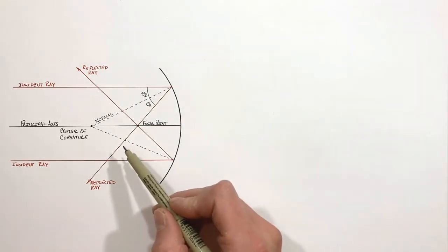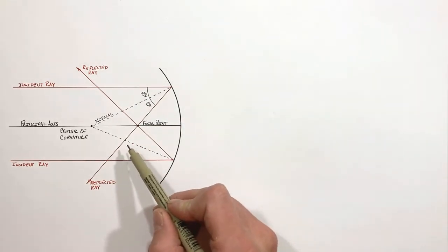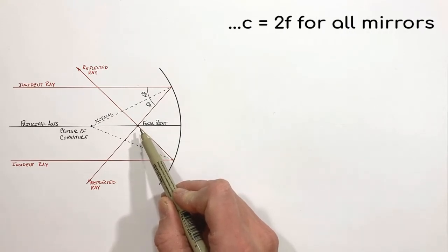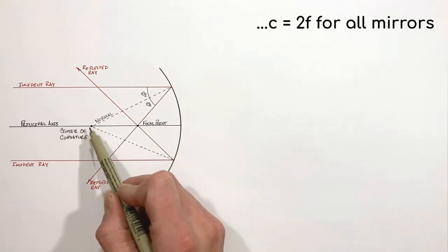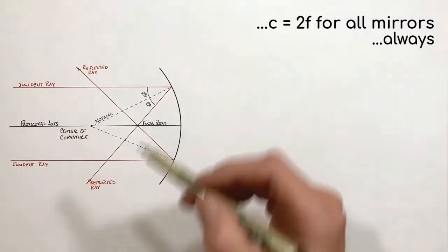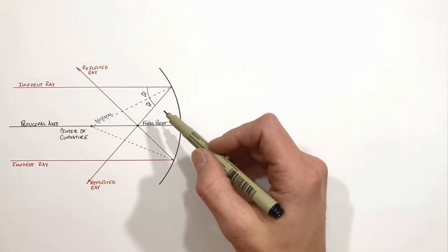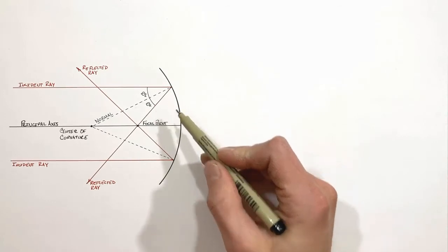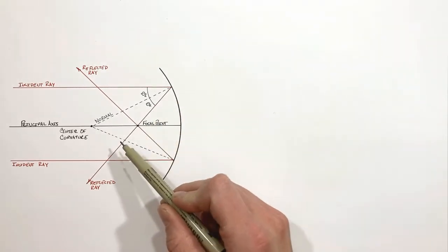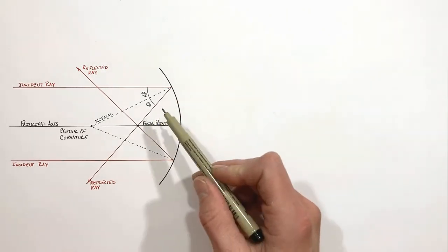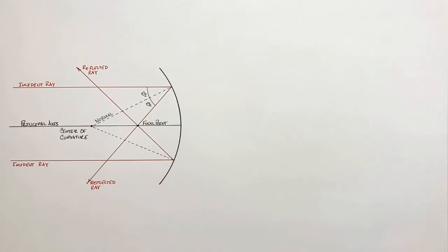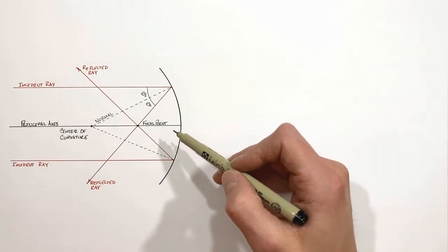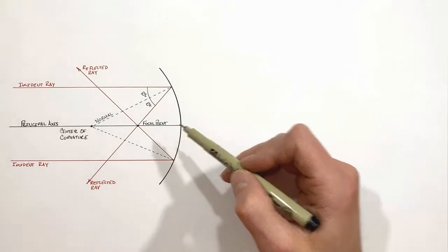For geometric reasons we don't need to get into, the focal point of a mirror is always halfway between the mirror and its center of curvature. So we've seen why light bounces off a mirror in a certain way. But to answer why sometimes we see ourselves upside down in a spoon and sometimes upright, we need to look a little farther. To answer this question, let's draw what's called a ray tracing diagram for a concave mirror.